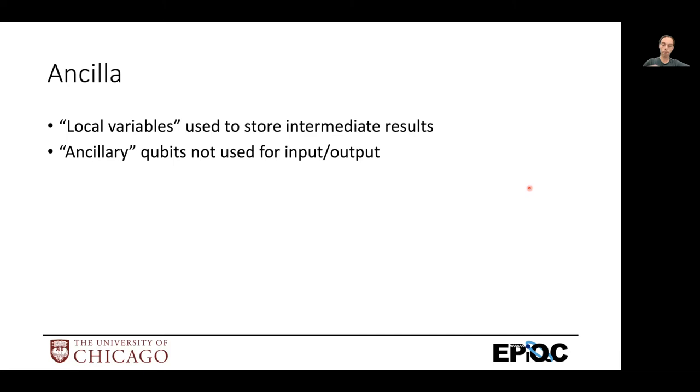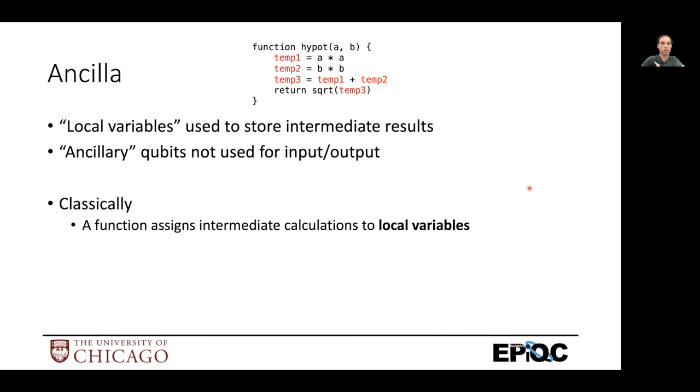So ancilla are basically the local intermediate states of your computation. So in like a classical program, you've got functions with intermediate variables in the middle that, for example, here calculates hypotenuse of a triangle where you have to multiply two numbers. Store those in temporary variables and then add those temporaries before you can then take the final square root and return the result.